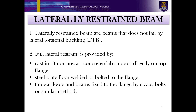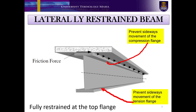Laterally restrained beams are beams that do not fail by lateral torsional buckling. Point number 2 provides you the list of how a beam can be laterally restrained. This picture shows an example of the fully laterally restrained beam. The lateral restraint to the compression flange of a beam prevents sideways movement of the flange.